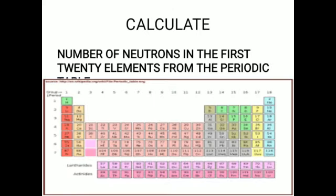Today's homework is a calculation activity: calculate the number of neutrons and protons in the first 20 elements from the periodic table. Thank you, class. God bless you and see you tomorrow.